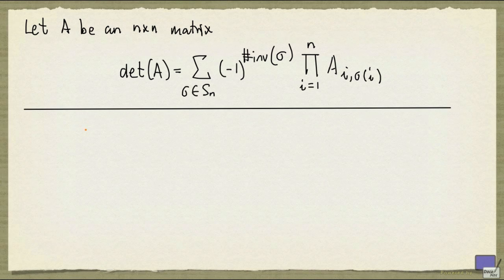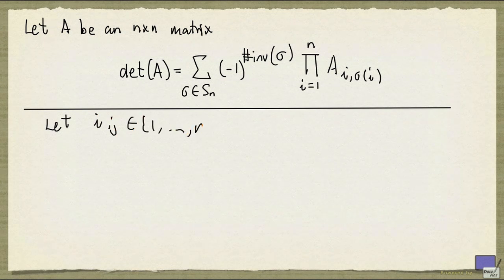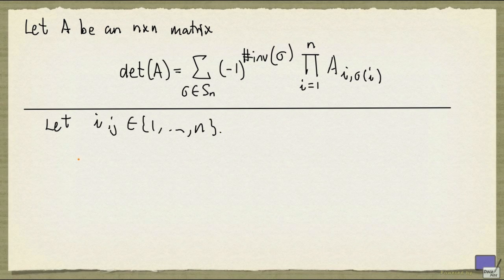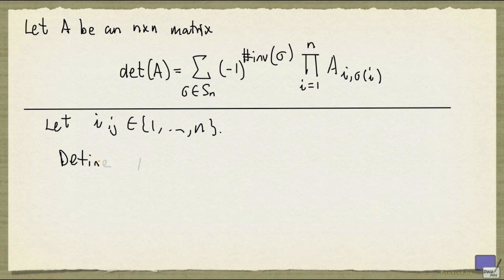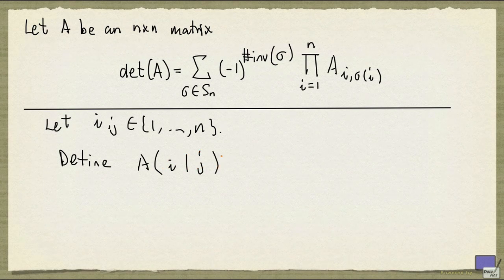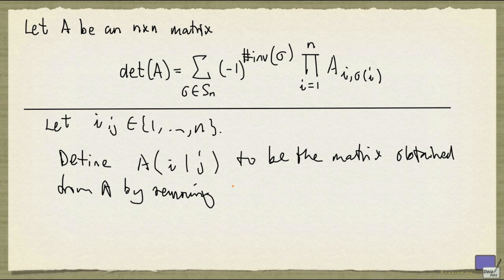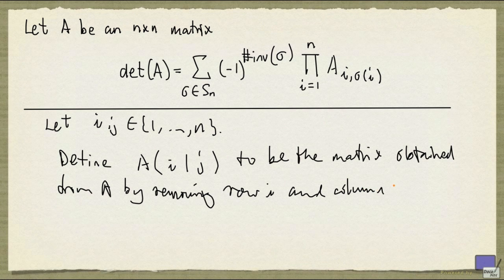Let me first define a notation. Let i and j be from the set 1 up to n. We're going to define A(i|j) to be the matrix obtained from A by removing row i and column j of A.